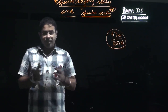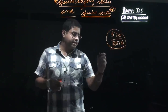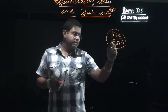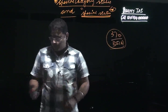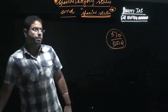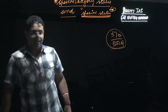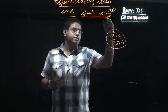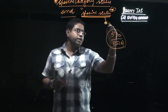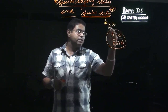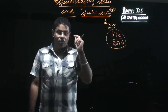Of late we have been reading a lot about Article 370 and Article 35A in newspapers. This article relates to the Special Status that has been accorded to the state of Jammu and Kashmir. Article 370 was added to the Indian Constitution when it came into being.